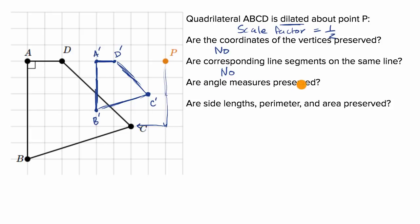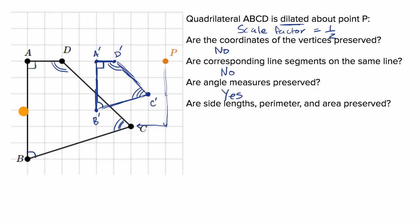Are angle measures preserved? Yes — this is something that dilations do preserve. This angle is still the same as that angle; it was a right angle before and it's still a right angle. The measure of each angle in the image equals its corresponding original angle. Are side lengths, perimeter, and area preserved? Dilations are a non-rigid transformation, so side lengths are not preserved. If side lengths aren't preserved, perimeter is definitely not preserved, and area is not preserved either — so no for all of these. If we were talking about a rigid transformation like a translation or rotation, these three would be preserved.